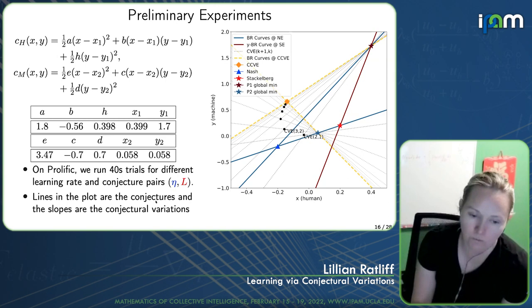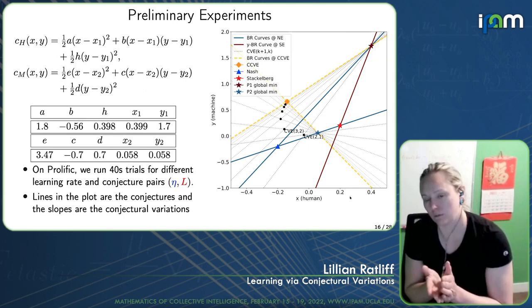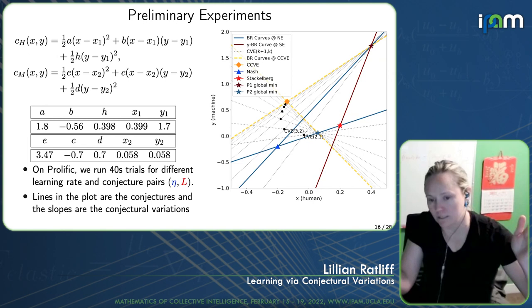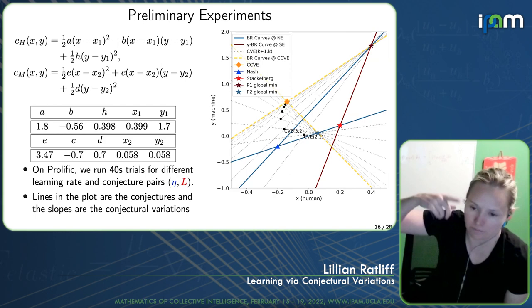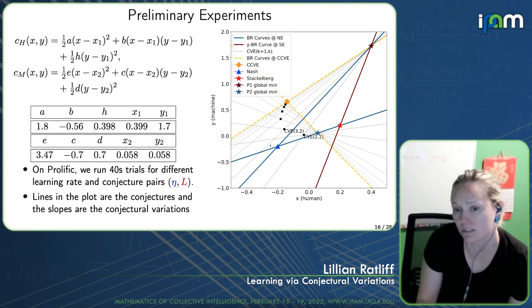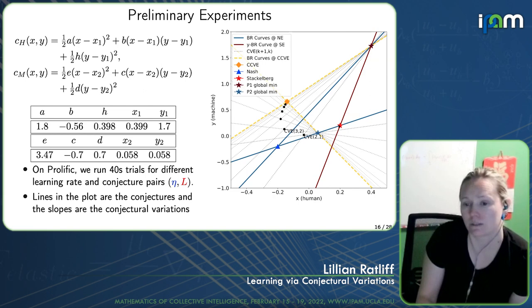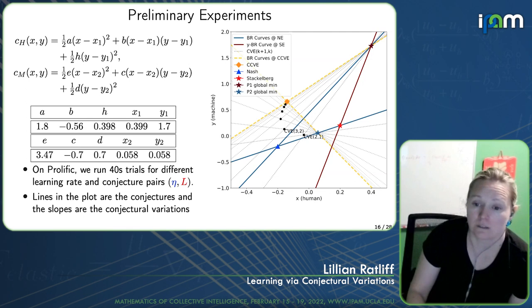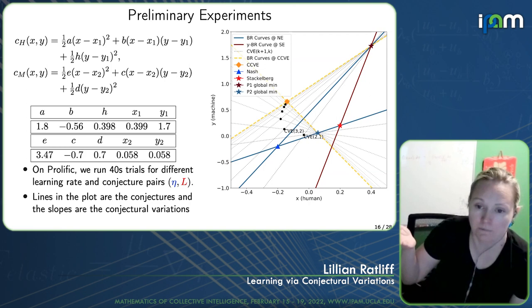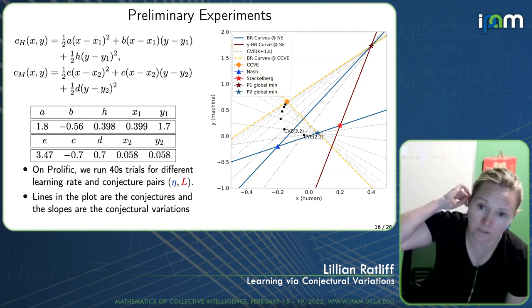On the right-hand side, I'm showing the landscape of equilibria for this game. On the x-axis is the human's decision, y-axis is the machine's decision, and these lines are different best response curves for their cost functions — which are quadratics, so the best responses are lines and contours are ellipses. The blue point is the Nash equilibrium, the red point is the human-led Stackelberg equilibrium where the machine has the null conjecture, and there's a whole suite of conjectural variations equilibria for different levels of conjecture, leading to what's called the consistent conjectural variations equilibrium — the limiting case where players reason at k equals infinity.